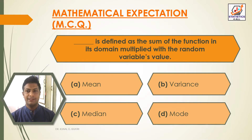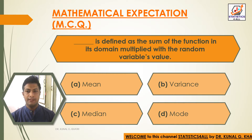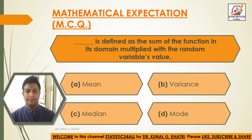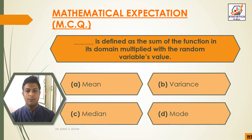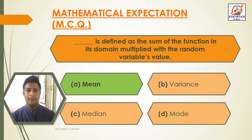Dash is defined as the sum of the function in its domain multiplied with the random variable's value. Option A — Mean; Option B — Variance; Option C — Median; Option D — Mode. The answer is Option A: Mean, which is defined as the sum of the function in its domain multiplied with the random variable's value.